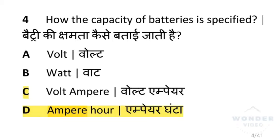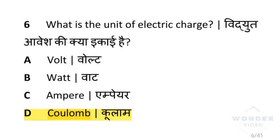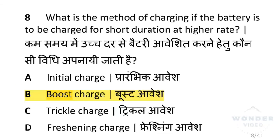How is the capacity of a battery specified? In ampere hours. What is the name of the defect that causes bending of plates in secondary cells? That is buckling. What is the unit of electric charge? Coulomb. What is the output voltage of a lithium cell? 2.5 volts. What is the method of charging if the battery is to be charged for a short duration at a higher rate? That is called boost charge.